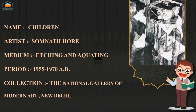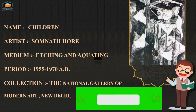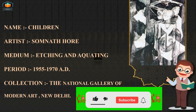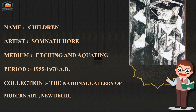The name of this graphic print is Children. The artist is Somnath Hore. The medium is etching and aquatint. The period is 1955 to 1970 AD. The collection is the National Gallery of Modern Art, New Delhi.